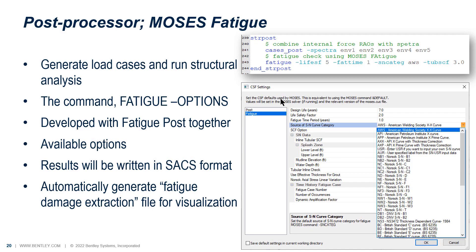Next is Moses fatigue. To use this module, issue the fatigue command and specify the necessary options such as SN curve, safety factors, etc. Like Moses Post, a drop-down menu is also available. These are the new Moses structural post processors, and in the next section, let me show you a video clip of Moses Post View.